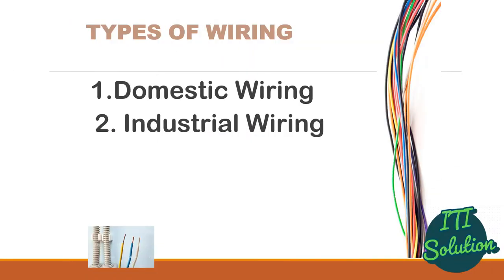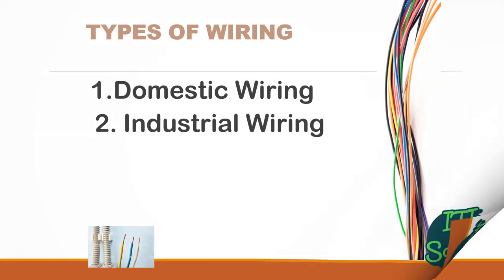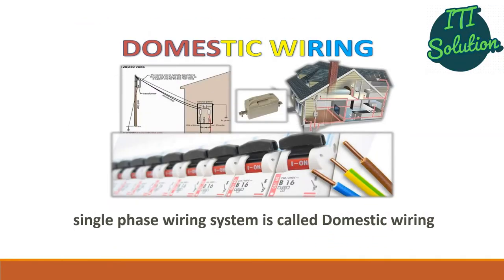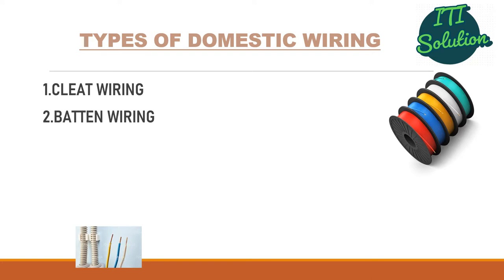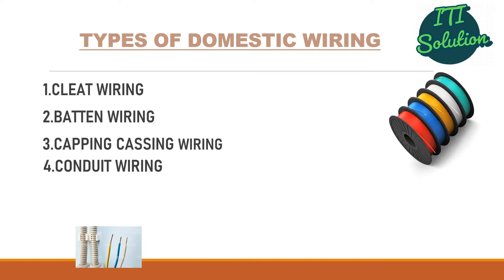Basically, wiring systems are classified into two types. One is domestic wiring and another is industrial wiring. Domestic wiring can be classified into four types: cleat wiring, batten wiring, capping casing wiring, and conduit wiring.